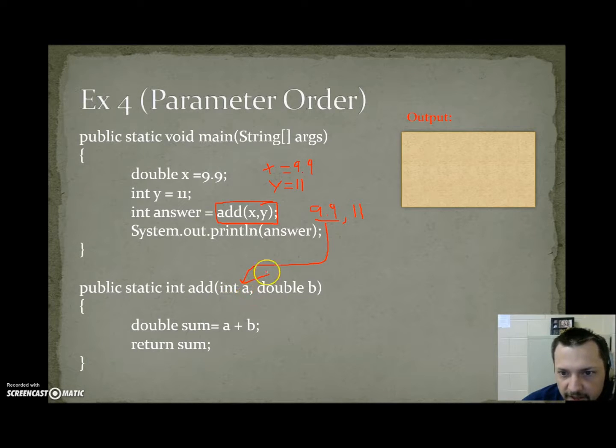So int a cannot take on the value of 9.9. What would happen here, if we try to do this, we'd get possible loss of precision. So the first value is getting put in the first parameter. So when you actually try to compile it, it's going to tell you symbol not found, add double comma int. There is no add method that takes double comma int. If we had sent it y comma x, it would work, because there is a method that receives int comma double. But we sent them in the wrong order, so there's no method that works for double comma int. It does not reorder parameters for you.